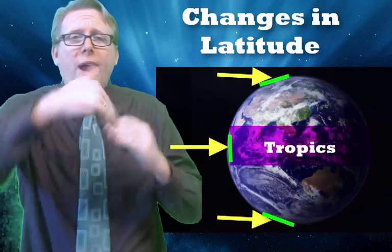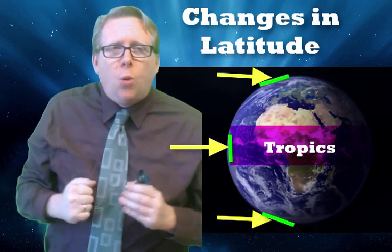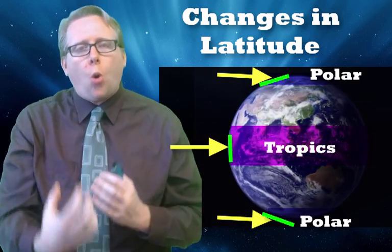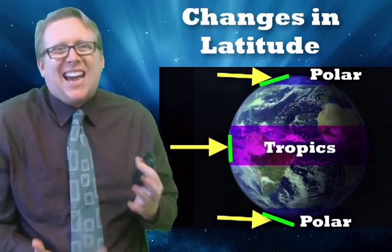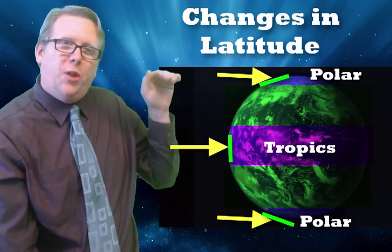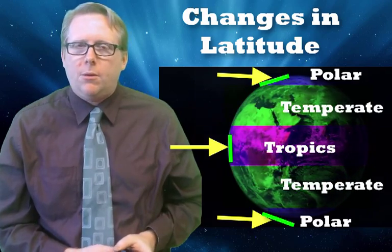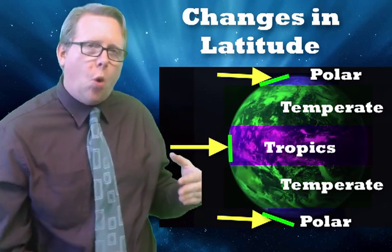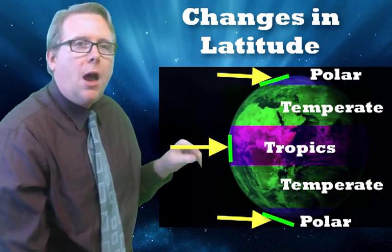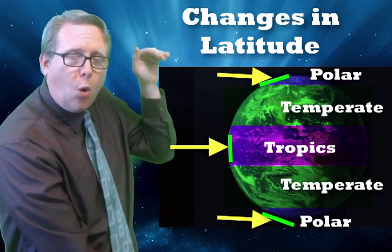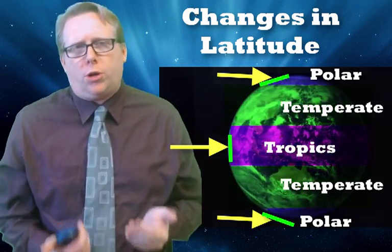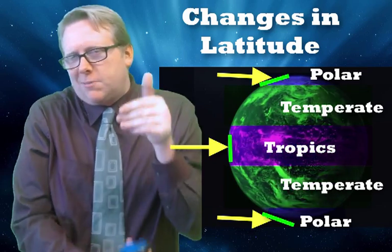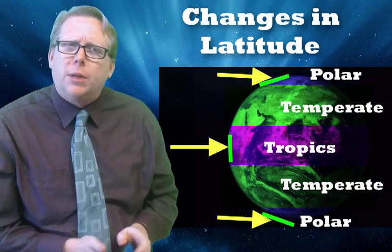At the other extreme — way out on the edges of our planet — the sunlight is always coming in at an angle, so it's colder. And in between, it's kind of like Goldilocks: if it's really hot at the equator and really cold at the poles, in between it's just right. So we've come up with names: the warm middle area is called tropical climates, the always-cold areas near the poles are polar climates, and in between is the temperate — a little bit of both.